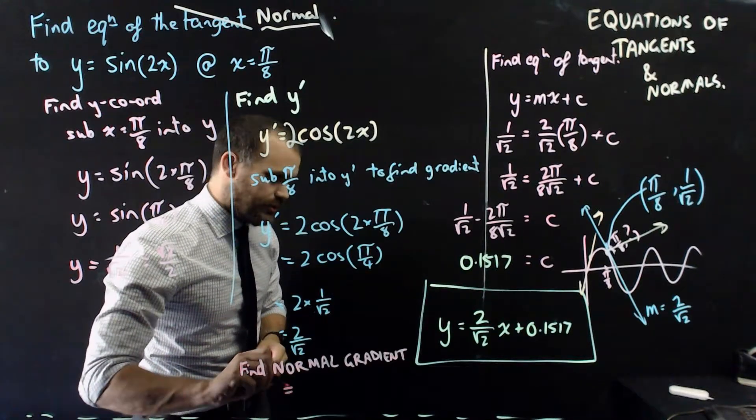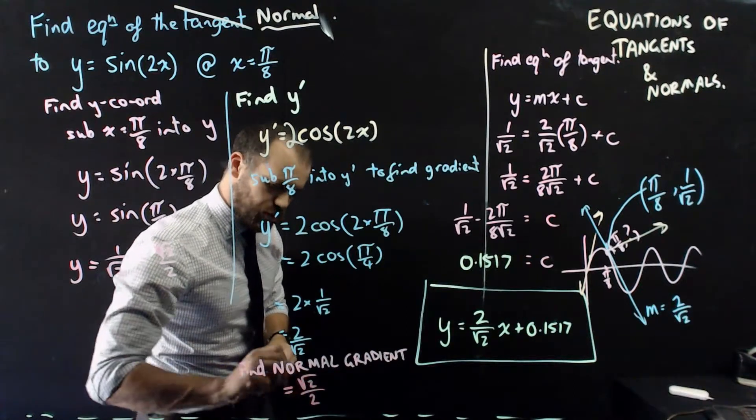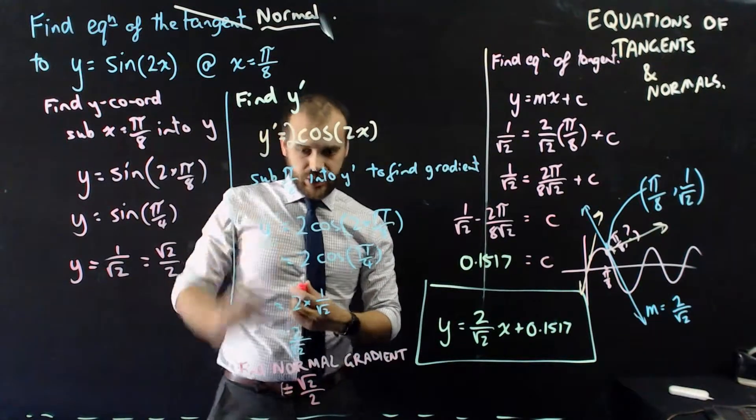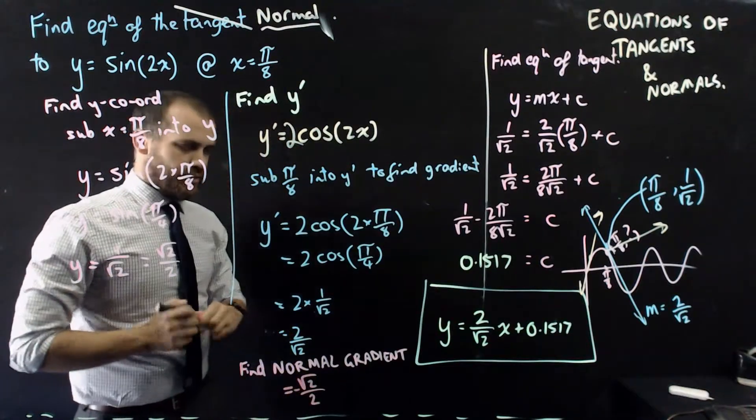So the normal gradient, it's just like one line of working here. I'm going to flip this upside down, so now it's root 2 over 2, and then I'm going to change the sign. It was positive, not anymore, it's negative.